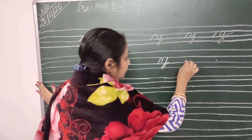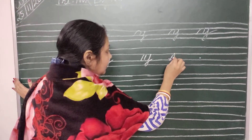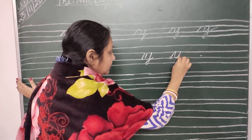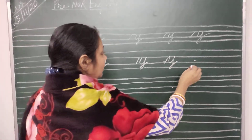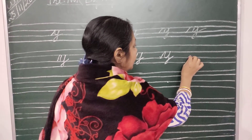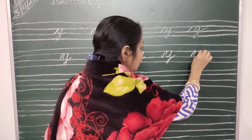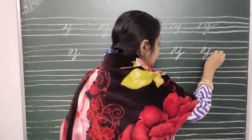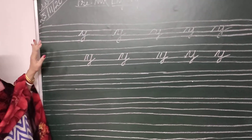So once again: start from the third line, go up to the second line, come down to the third line, go up to the second line, come down to the third line and just give a curve. Now once again, start from the dot at the third line, go up to the second line, come down to the third line, again go up to the second line, come down to the third line and just give a curve. So children, I have just shown you how to write small letter Y.